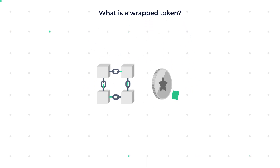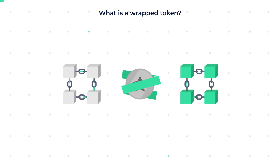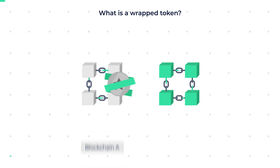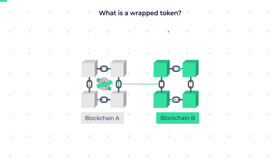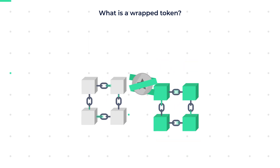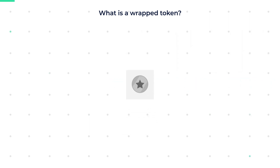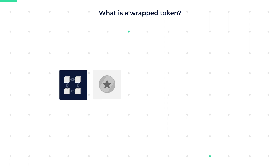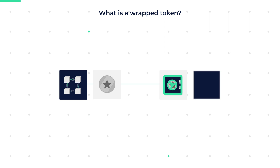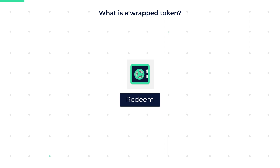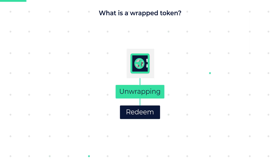What is a wrapped token? A wrapped token is a tokenized version of an asset, which makes it possible for the asset to exist on a different blockchain. The point of wrapping a token is to make it available on other blockchains so as to have the same benefits of that specific blockchain. A wrapped token is also pegged to the value of the asset it represents. The original asset, in the form of a native token on a blockchain, is placed in a wrapper — think of the wrapper like a digital vault — so that the wrapped version can be minted on a different blockchain. You can redeem them whenever you want via a process called unwrapping.